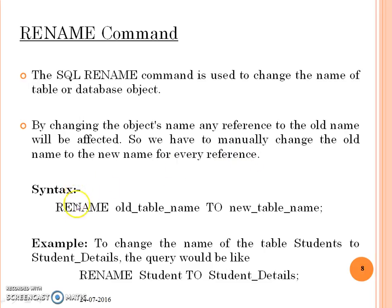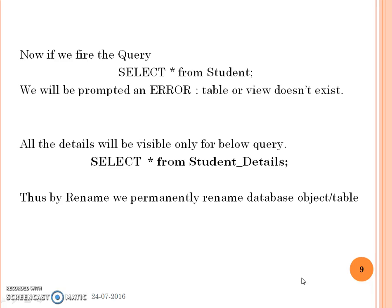The syntax for the RENAME command is: RENAME old_name TO new_name. For example, if my table was previously named student and I want to rename it to student_details, the query would be: RENAME student TO student_details. Now if I fire the query SELECT * FROM student, the system will prompt an error that the table or view does not exist, because my table has been permanently renamed to student_details. My records would only be visible with SELECT * FROM student_details.